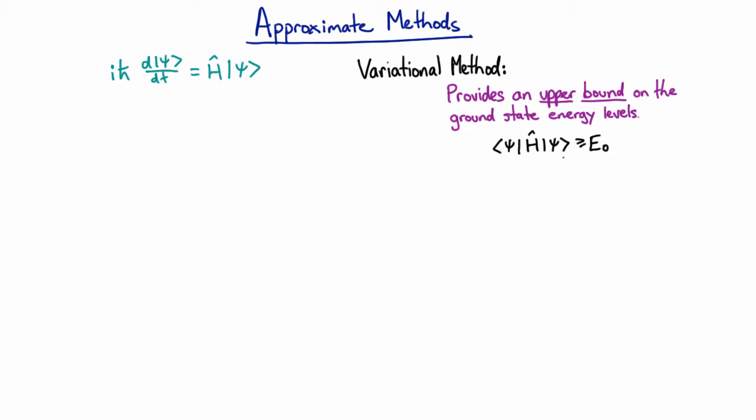The obvious basis in which to calculate this expectation value is the basis of eigenstates of the Hamiltonian. So supposing we have eigenstates of the Hamiltonian - these are the eigenstates and this is the eigenvalue.